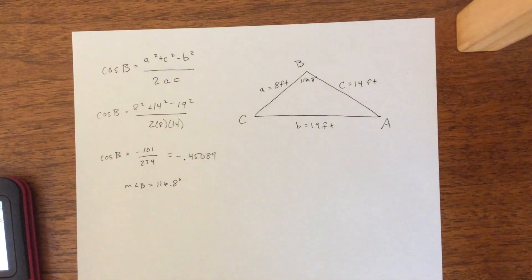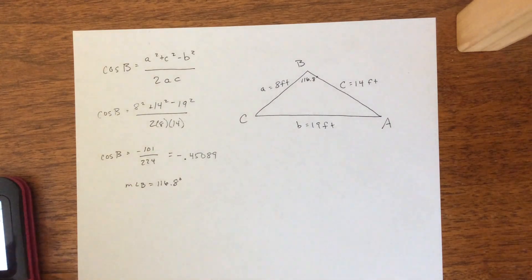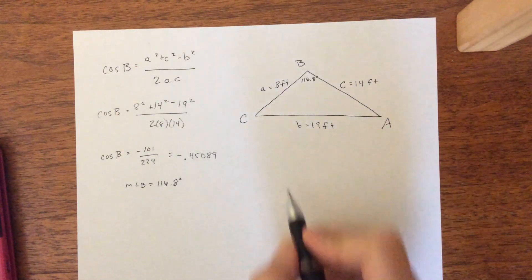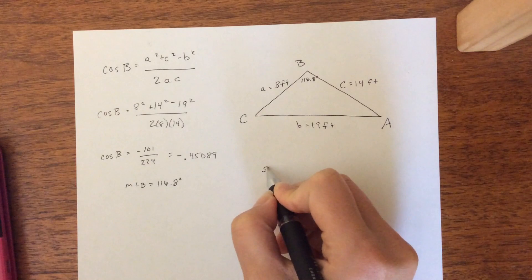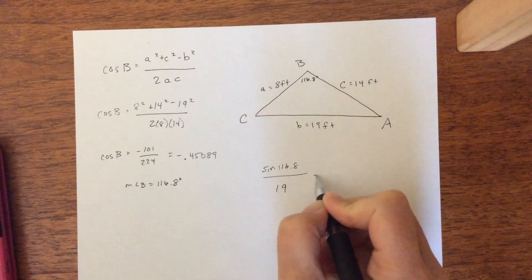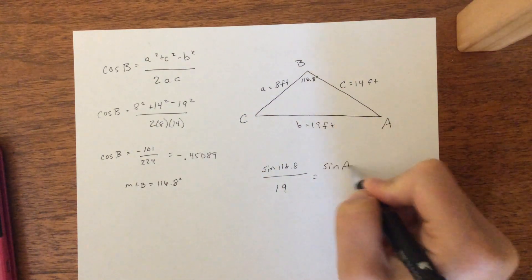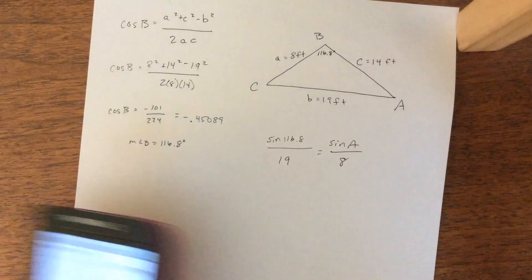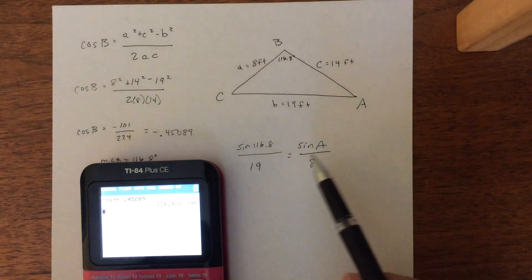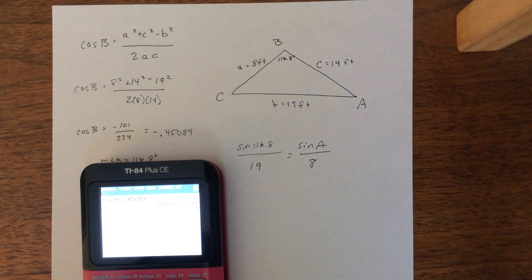So now we know one of our angle measures. It's a lot easier and we can use the law of sines, which I think is a lot less work than law of cosines. So we know our angle and we know the corresponding side. So I'm going to say sine of 116.8 over 19 equals the sine of A over 8. So we can plug this into our calculators. We're going to multiply and then divide. So the sine of 116.8 times 8 divided by 19.